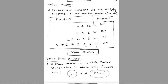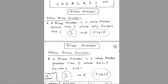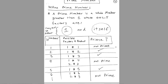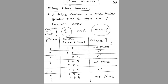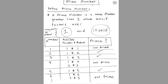Prime factors are going to help us when we reduce fractions. But first, we have to go to page 5 and define a prime number. A prime number is a whole number greater than 1 whose only factors are 1 and itself, and they must be different.